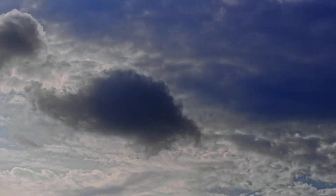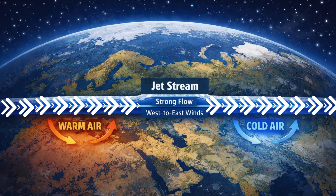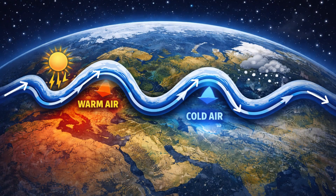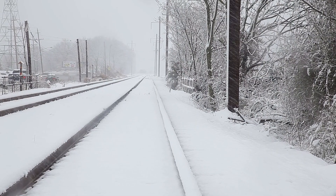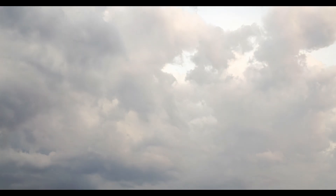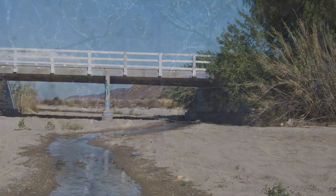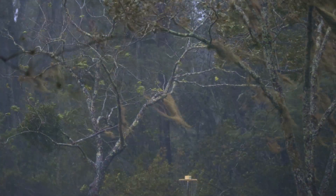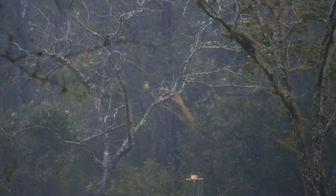The speed of the jet stream is just as important as its shape. A fast, relatively straight jet stream leads to more stable and predictable weather. A slower, more distorted jet stream allows weather systems to stall. This can result in prolonged heat waves, extended cold outbreaks, persistent rainfall, or long-lasting droughts. Many extreme weather events are linked to slow-moving, highly amplified jet stream patterns.